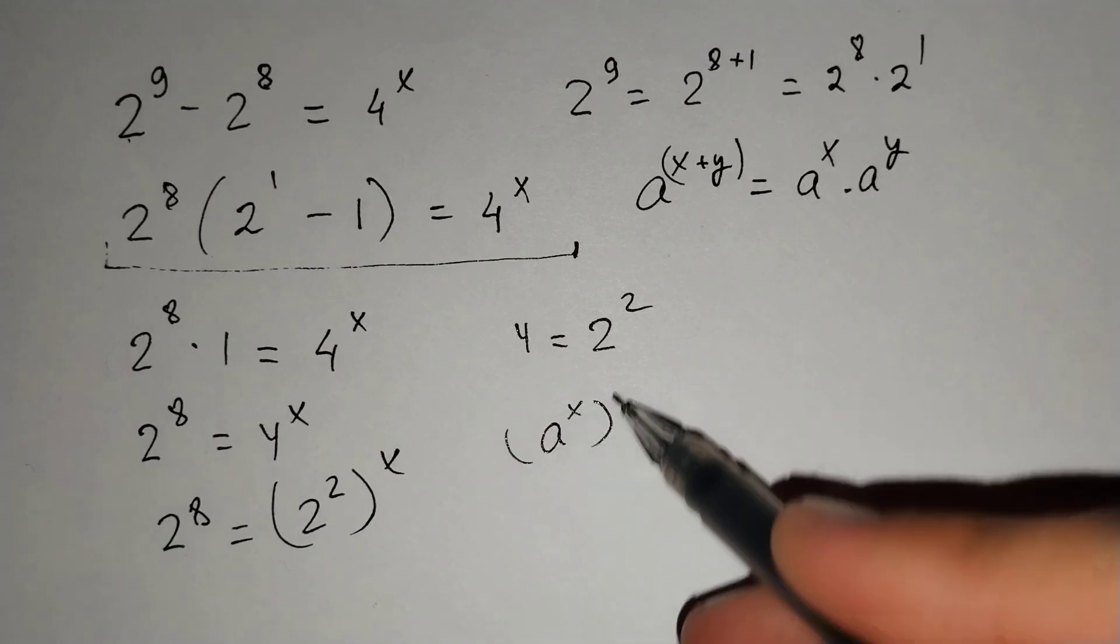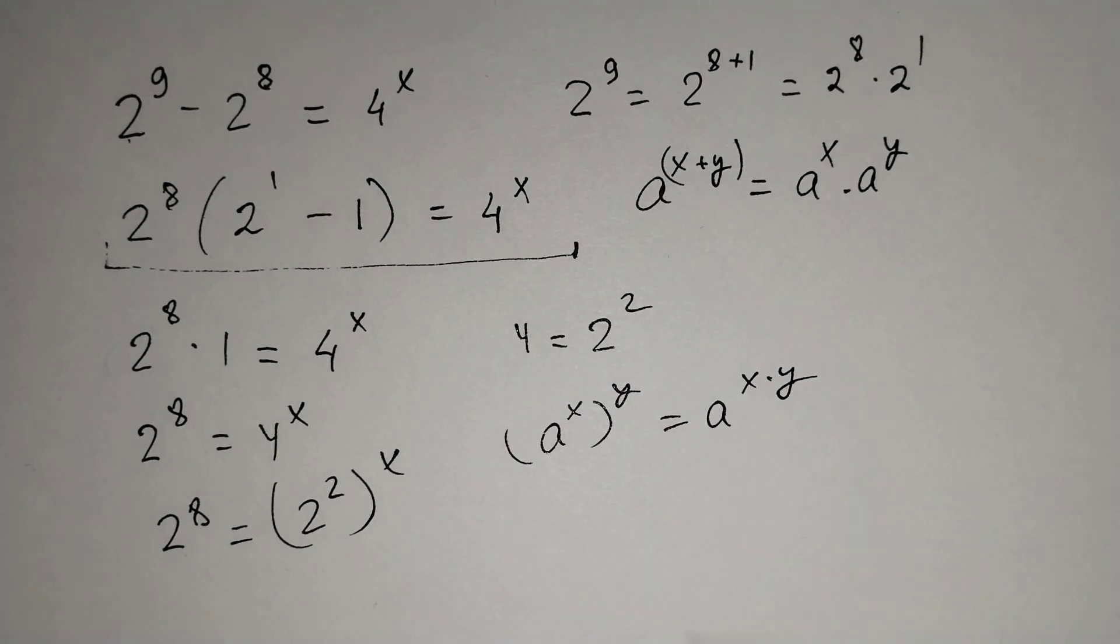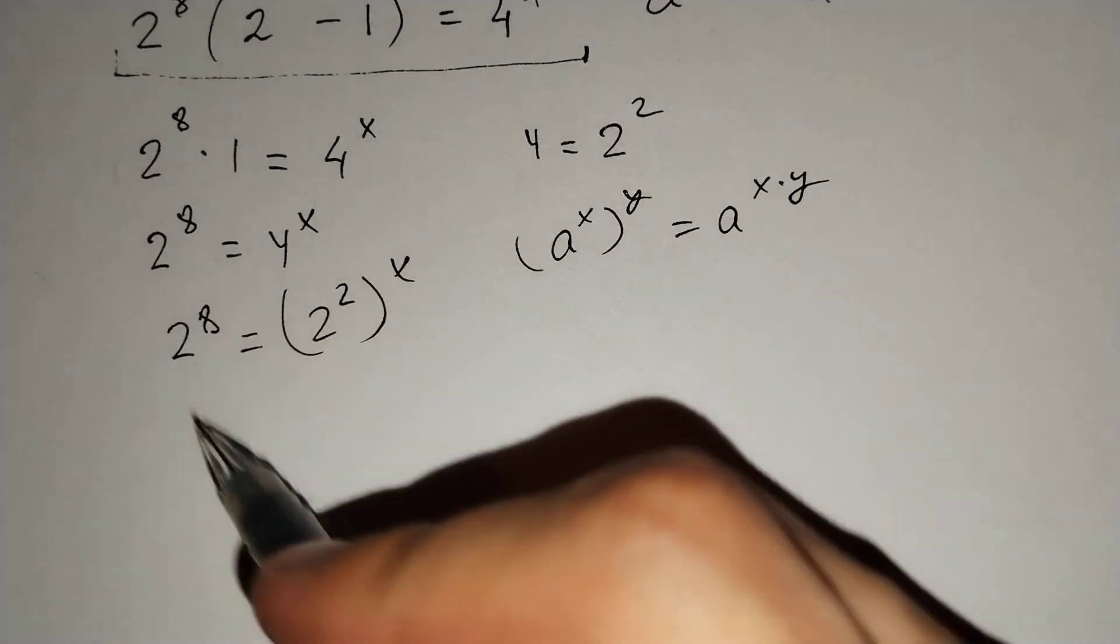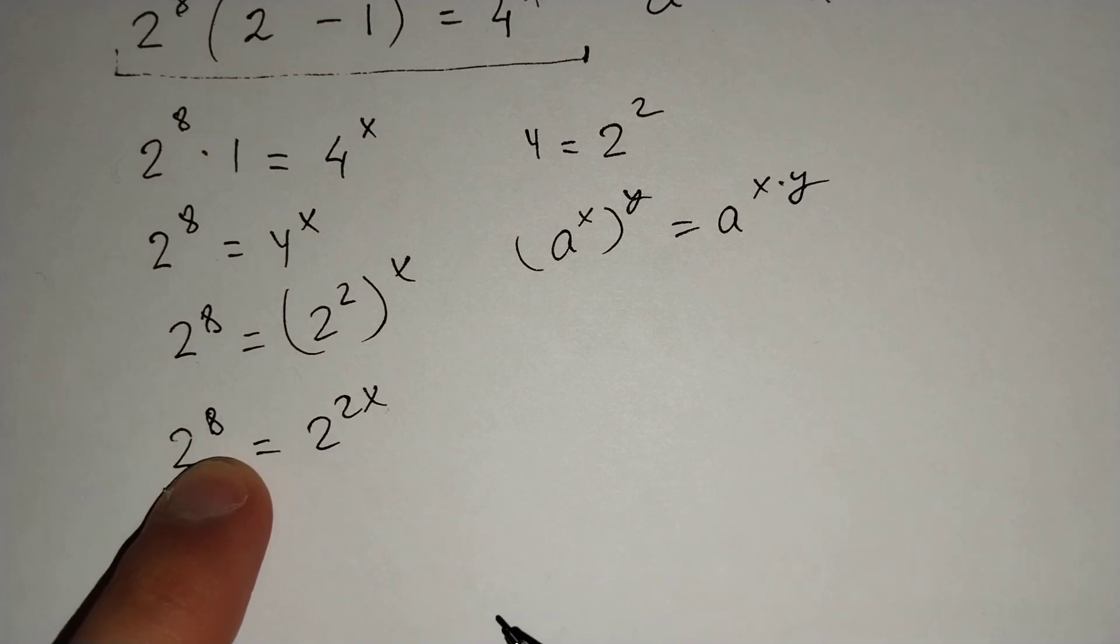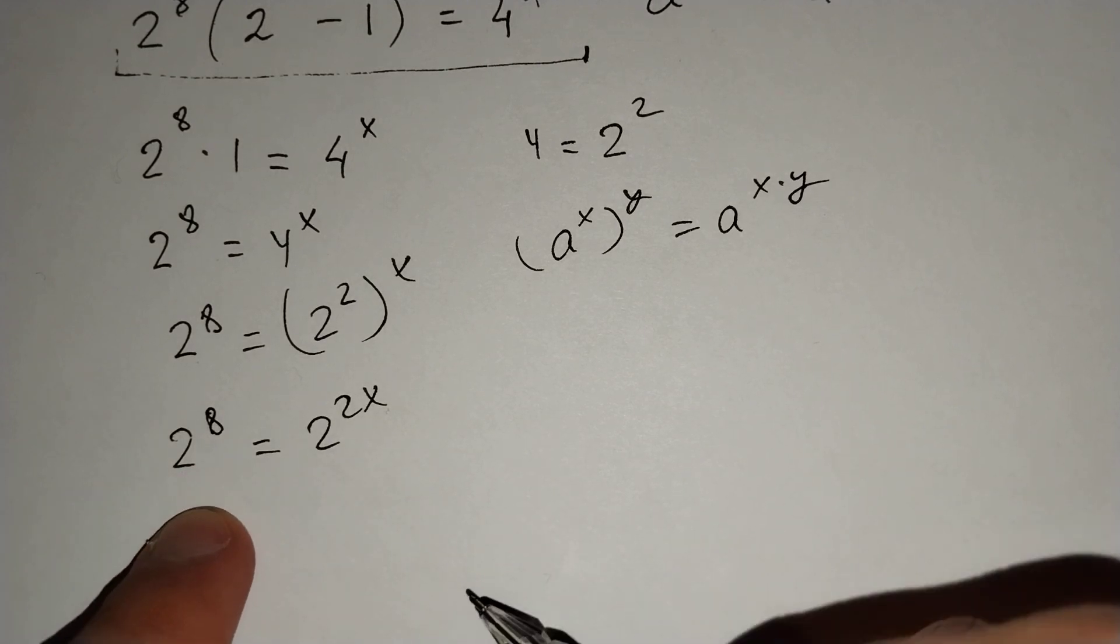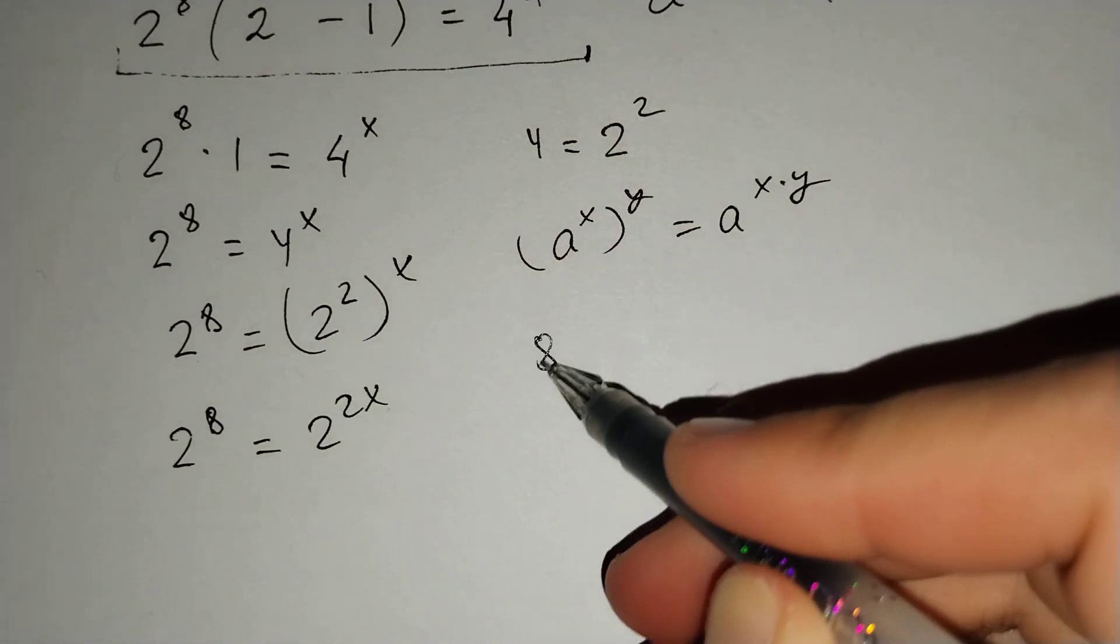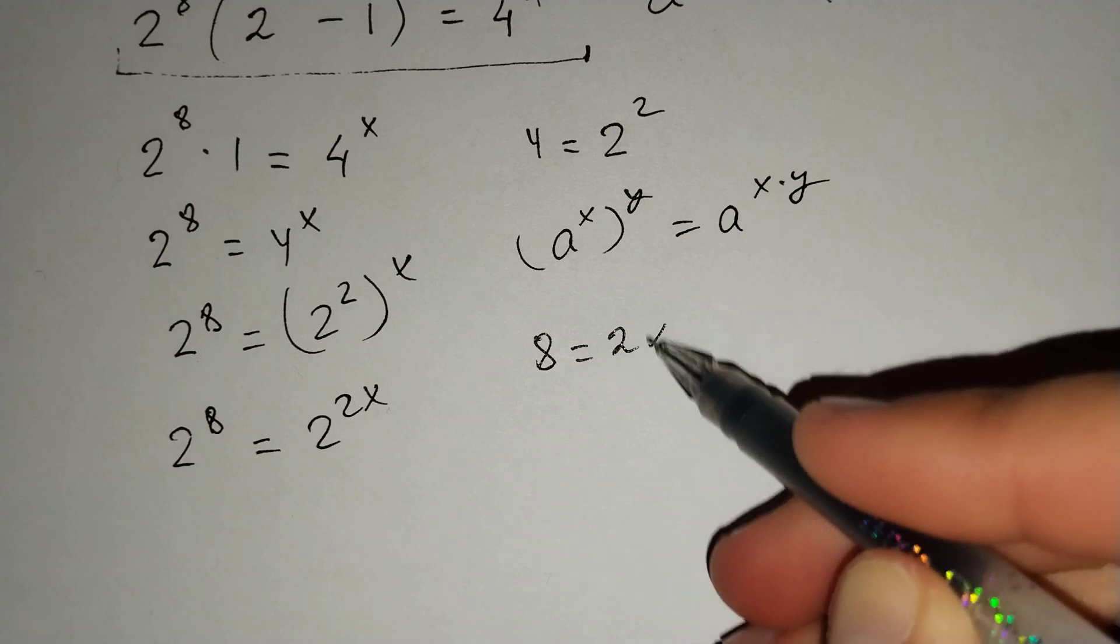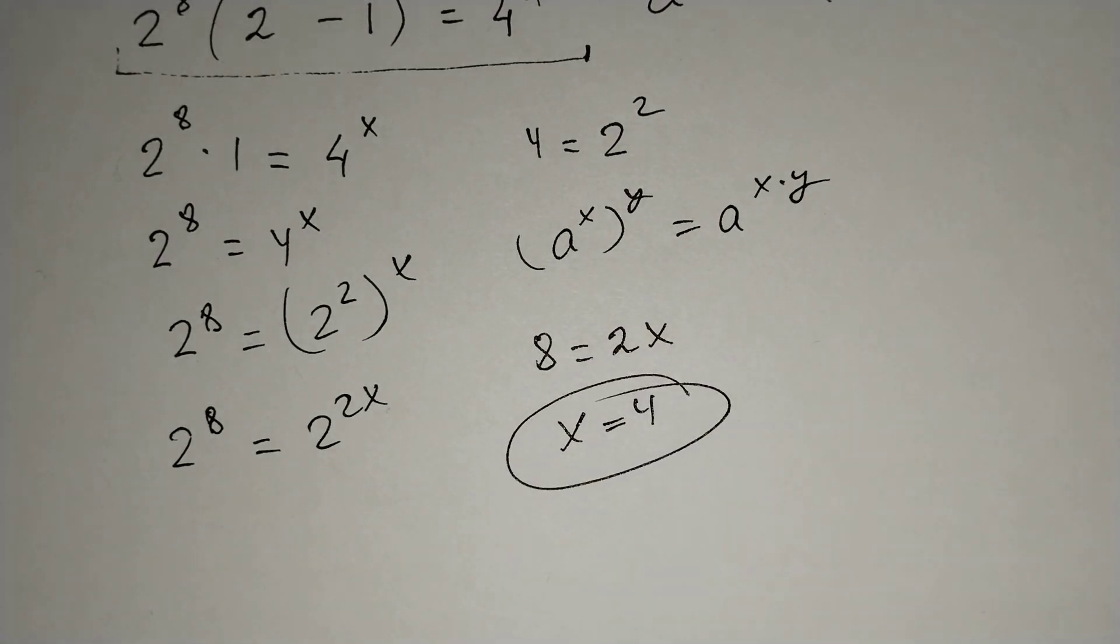And a power x power y equals a power x times y. For this formula, this is equal to 2 power 2x equals 2 power 8. The bases are the same, that's why exponents should be equal.